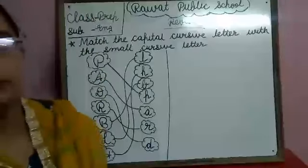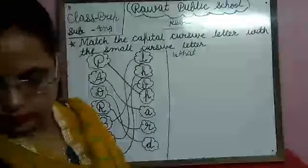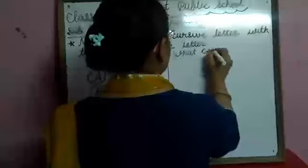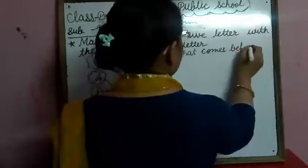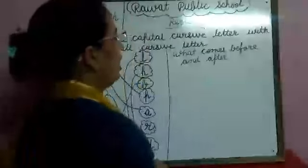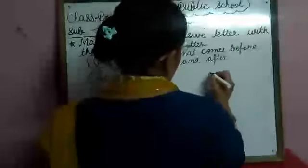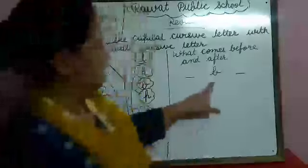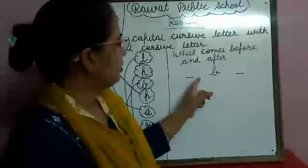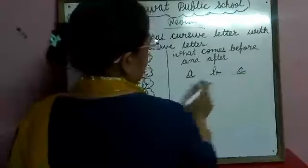Now we will do what comes before and what comes after. What comes before and after? We have done before and after. This is small cursive B. So, what comes before B? A. And what comes after B? C.